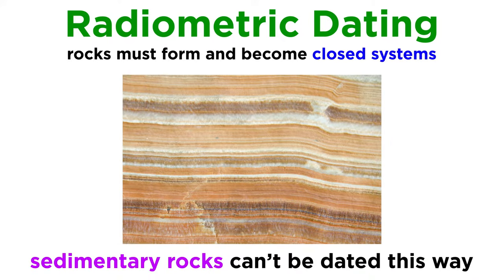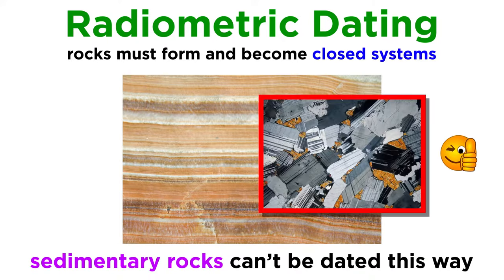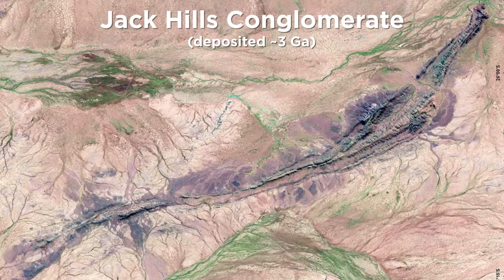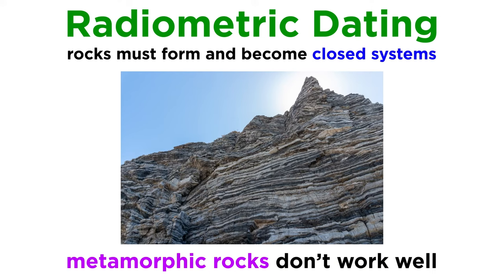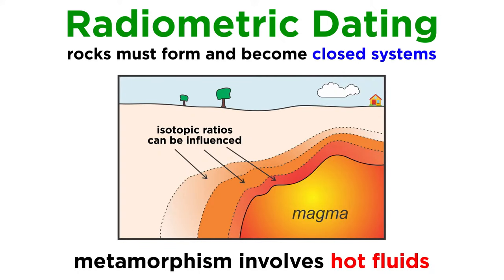Sedimentary rocks cannot be dated using absolute dating, but their constituent mineral grains can be. For example, in a previous tutorial we mentioned the Jack Hills conglomerate, which was deposited about 3 billion years ago, but it contains the oldest terrestrial material found on earth, in the form of 4.4 billion year old zircon crystals. Metamorphic rocks are difficult to date with radiometric dating because the process of metamorphism can involve hot fluids, which can add or remove parent and daughter isotopes that are used to date the rock.